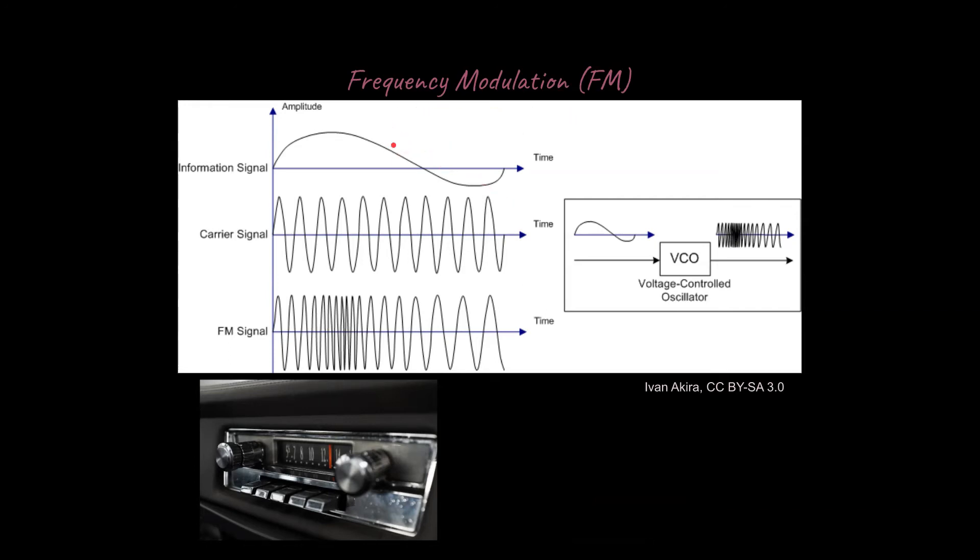So with frequency modulation, FM, we encode the information in the carrier signal in a different way. So if you notice, you've got your crest over here. This crest is going to correspond to a greater frequency of waves, and the trough over here is going to represent a lower frequency of waves. And that's how we're going to go about encoding it.